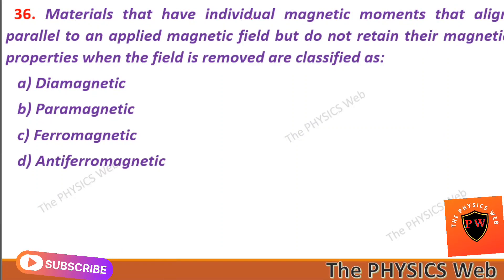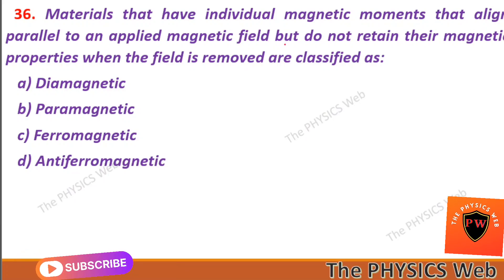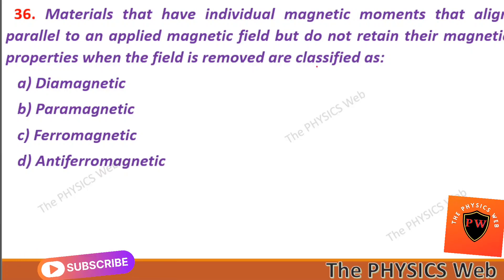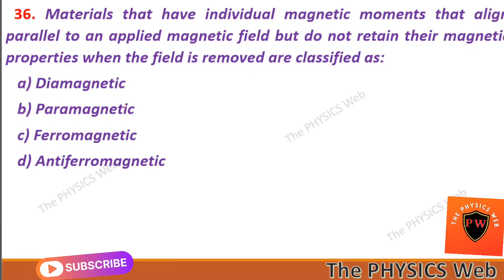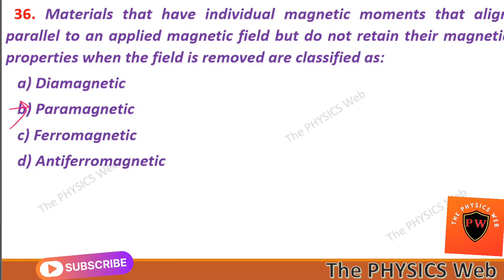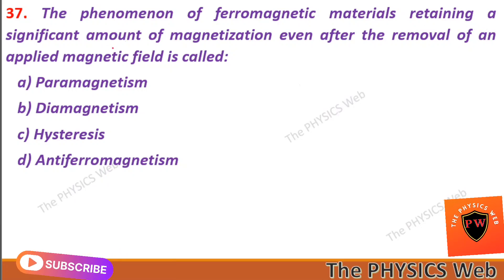Next, question thirty-six: materials that have individual magnetic moments that align parallel to an applied magnetic field but do not retain their magnetic properties when the field is removed are classified as paramagnetic materials. So B is your correct option. Question thirty-seven: the phenomenon of ferromagnetic materials retaining a significant amount of magnetization even after the removal of an applied magnetic field is called retentivity. So E is your correct option.